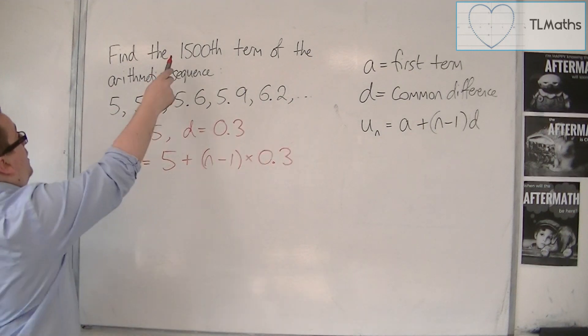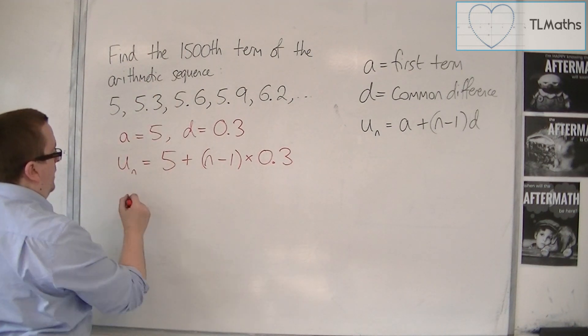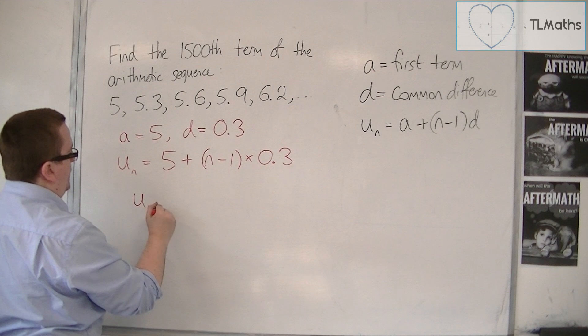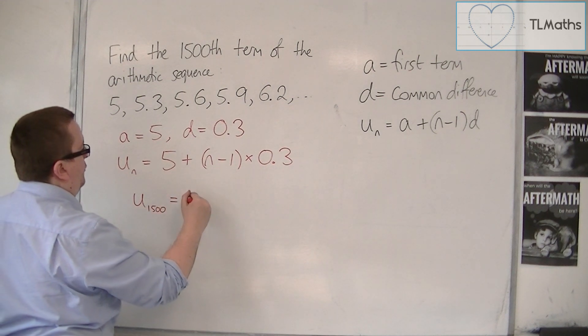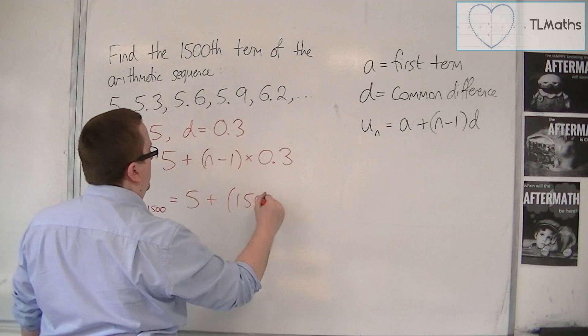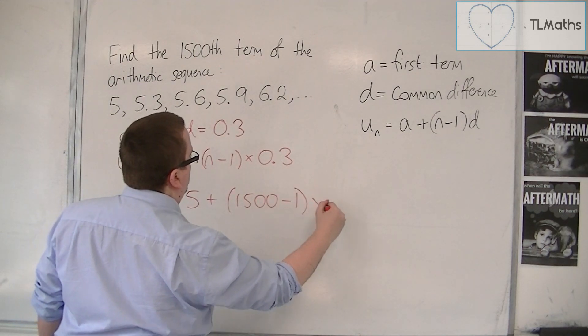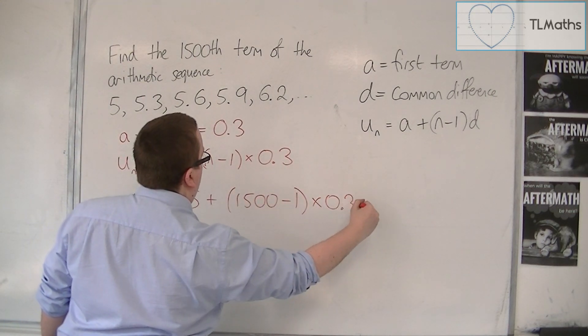Now I want to find the 1,500th term. So u1500 is equal to 5 plus 1,500 take away 1 times 0.3.